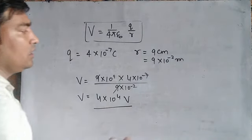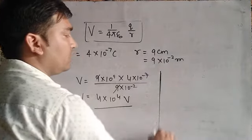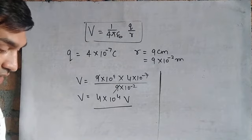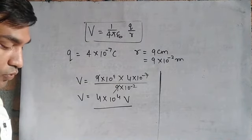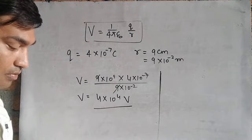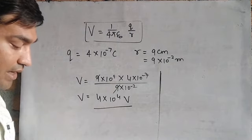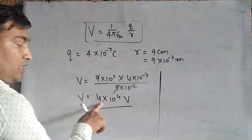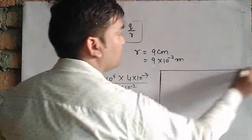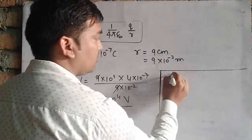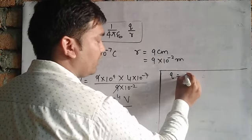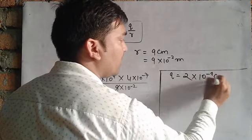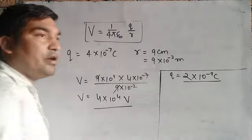This is the value of the potential 9 centimeters away from the charge — 4 into 10 to the power 4 volts. This is the application of the formula. Now another part is added to this problem: obtain the work done in bringing a charge of 2 into 10 to the power minus 9 coulomb from infinity to the point P.